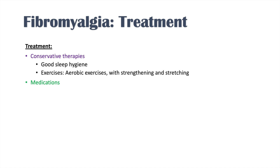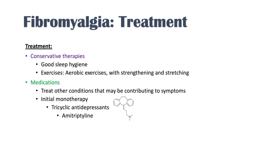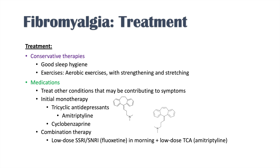If conservative therapies don't help, we move on to medications. First, we want to treat any other conditions contributing to symptoms. If that's been addressed, we move to initial monotherapy — tricyclic antidepressants, specifically amitriptyline. We can also consider cyclobenzaprine, or Flexeril, which is structurally very similar to amitriptyline but is a muscle relaxant. If initial monotherapy doesn't work, we move to combination therapy: low-dose SSRI like fluoxetine in the morning combined with low-dose tricyclic antidepressant like amitriptyline at night.